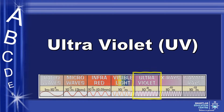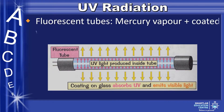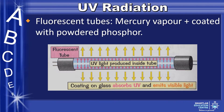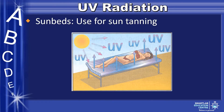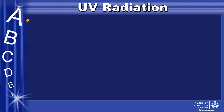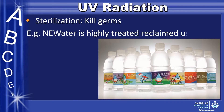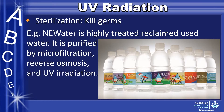Next, UV radiation. UV radiation is used in fluorescent tubes. The UV light produced inside the tube is absorbed by the phosphor coating on glass, which then emits visible light. UV light is also used in sunbaths for sun tanning. UV light is also used for sterilization because it can kill germs. For example, NEWater is highly treated reclaimed used water, purified by microfiltration, reverse osmosis, and UV radiation.